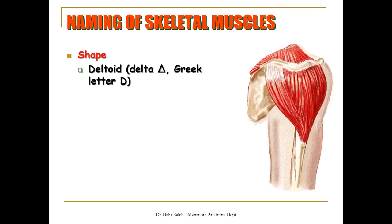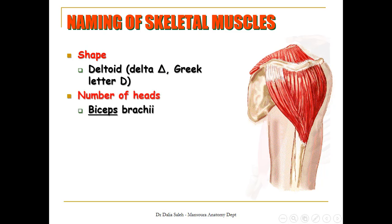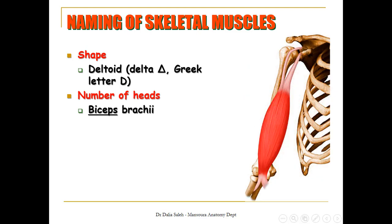Muscles can be named according to their shape. For example, the deltoid muscle covers the tip of the shoulder — 'oid' means 'looks like,' and 'delta' is the Greek letter equivalent to D, drawn as a triangle, so deltoid means triangle-shaped. Sometimes muscles are named according to the number of their heads or origins: biceps means two heads (bi = two, ceps = heads), triceps means three heads, and quadriceps means four heads.